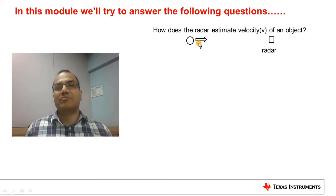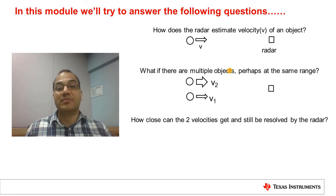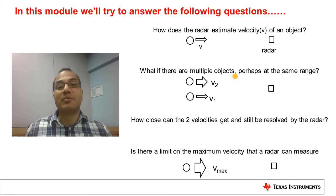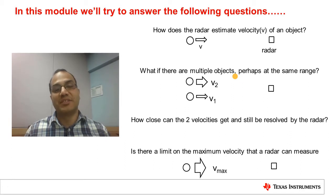This is going to be a recap from what we've learned in module 2. What if there are multiple objects perhaps at the same range from the radar but with different relative velocities? How close can the velocities of two equi-range objects get and still be resolved by the radar? Is there a limit on the maximum measurable velocity? Like in the earlier modules, we are going to start with a quick recap of some Fourier transform concepts.